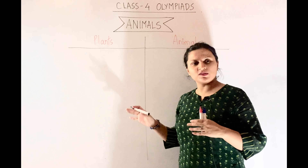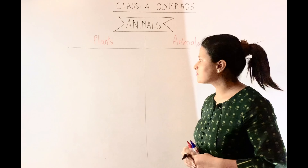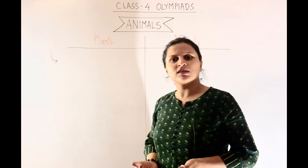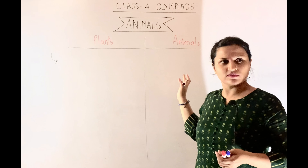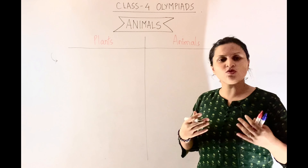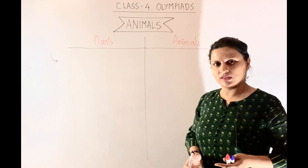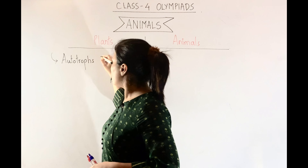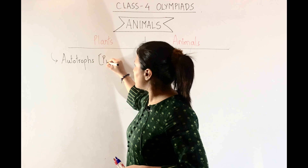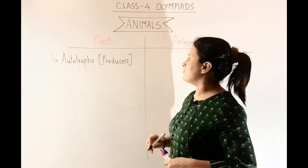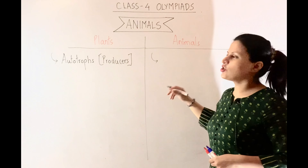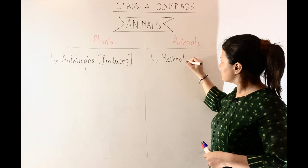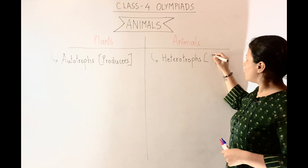Let us start by differentiating between plants and animals. Do plants produce their own food? Yes. Do animals produce their own food? No, they need to consume other plants and animals. So plants are called autotrophs — they are also known as producers. However, animals, which consume other plants and animals, are called heterotrophs, also called consumers.